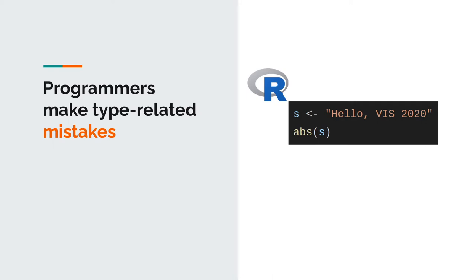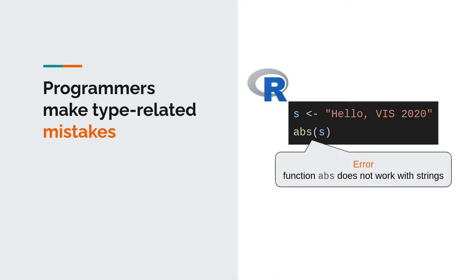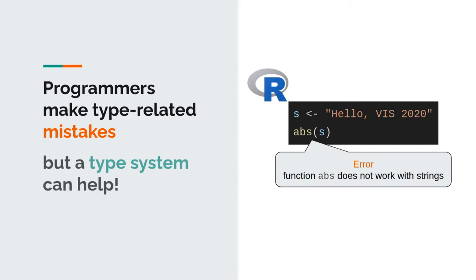Programmers often make mistakes like this. The abs function is incorrectly called with a string. A programming language can catch such mistakes early on, but for this it needs a type system.